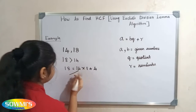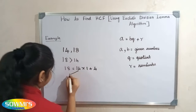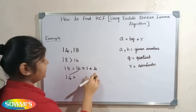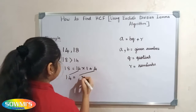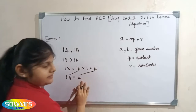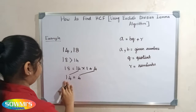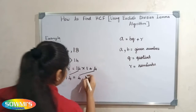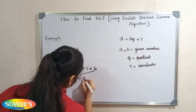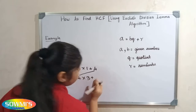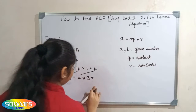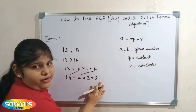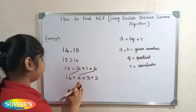Now our divisor will become the dividend and the remainder will become the divisor. So now we have to divide 14 by 4. Our quotient will be 3 and our remainder will be 2. Now we have to repeat the process again — the divisor will become the dividend.